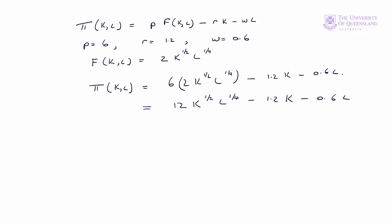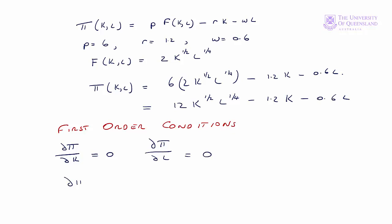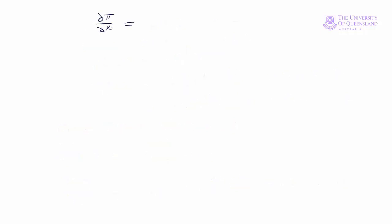Now we want to use the first order conditions to find the stationary points. The first order conditions are ∂π/∂K = 0 and ∂π/∂L = 0. ∂π/∂K: we're differentiating with respect to K, holding L constant. So we'll have 12, bring down the exponent to a half, K to the minus a half, L to the quarter — that's a constant — minus 1.2, minus 0 because L is a constant, and we set that equal to 0. Simplifying gives us 6K to the minus a half times L to the quarter minus 1.2 equals 0, which implies K to the minus a half times L to the quarter equals 0.2.